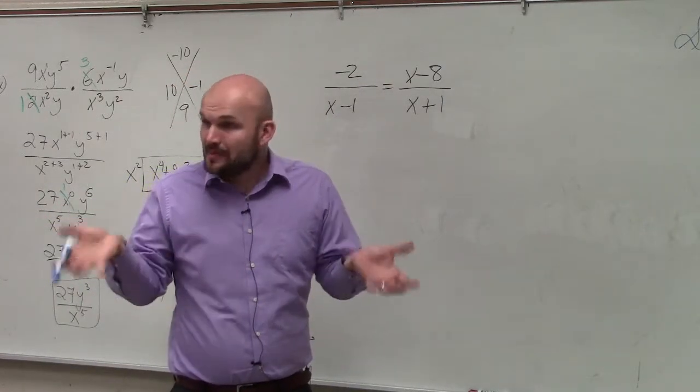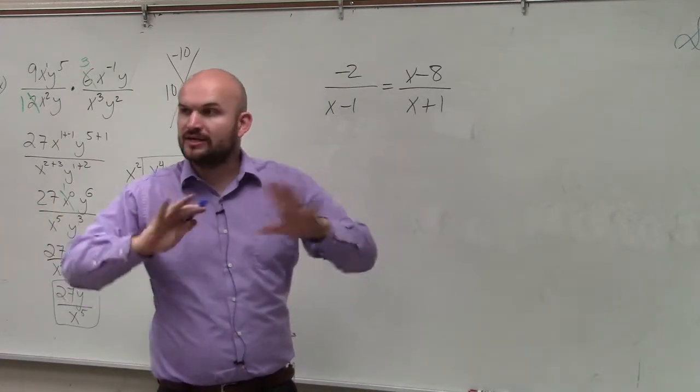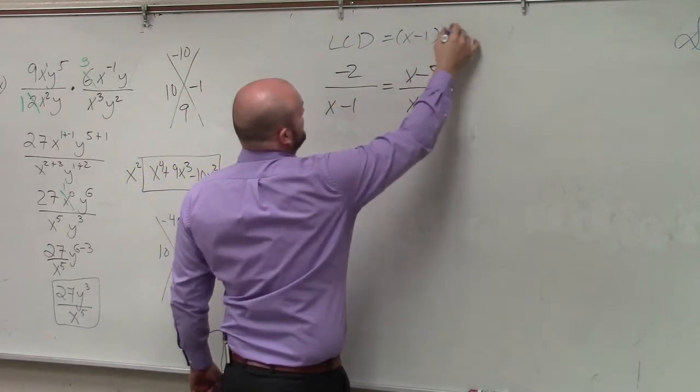When we're adding, we want common denominators, right? So fractions are okay. When we're solving, we're getting rid of them. So we determine our LCD, which in this case is basic: x minus 1 times x plus 1.